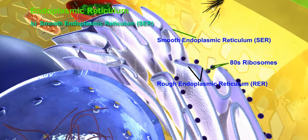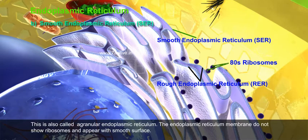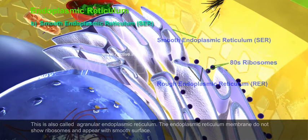B. Smooth Endoplasmic Reticulum (SER). This is also called agranular endoplasmic reticulum. The endoplasmic reticulum membranes do not show ribosomes and appear with a smooth surface.